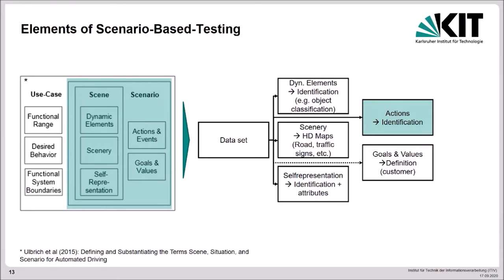Actions and events describe the transitions between these scenes while goals and values define our testing target. Applied to the concept, it is necessary to identify the different elements in our underlying dataset and transform them into an appropriate description format. For many parts, there already exist methods and formats like HD maps or the standards OpenDrive and OpenSCENARIO or the IPG formats TestRun and Road5.